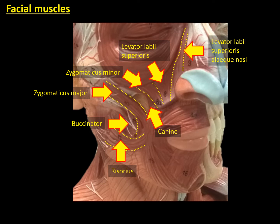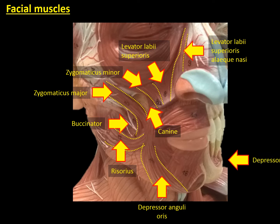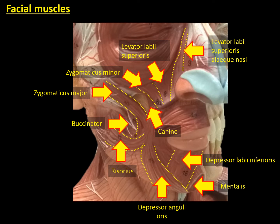Regarding the muscles for the lower lip, we can see in a superficial part the depressor anguli oris, which is partially overlapping the depressor labii inferioris. In the upper lip, we can see the orbicularis oris, which in turn is also partially overlapping the mentalis muscle. All around the lips, we find the orbicularis oris.